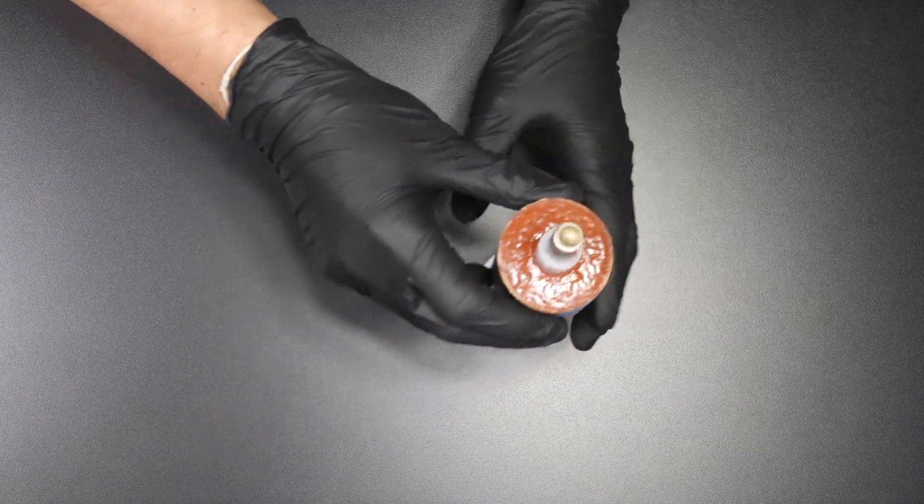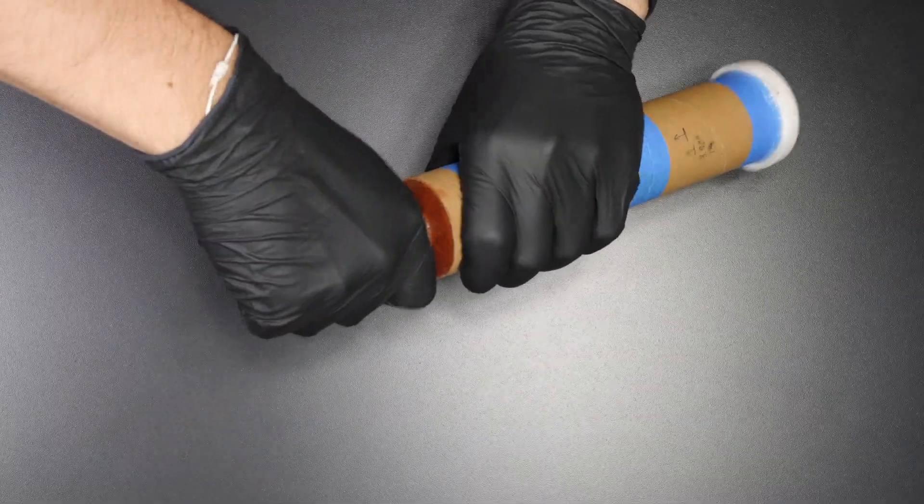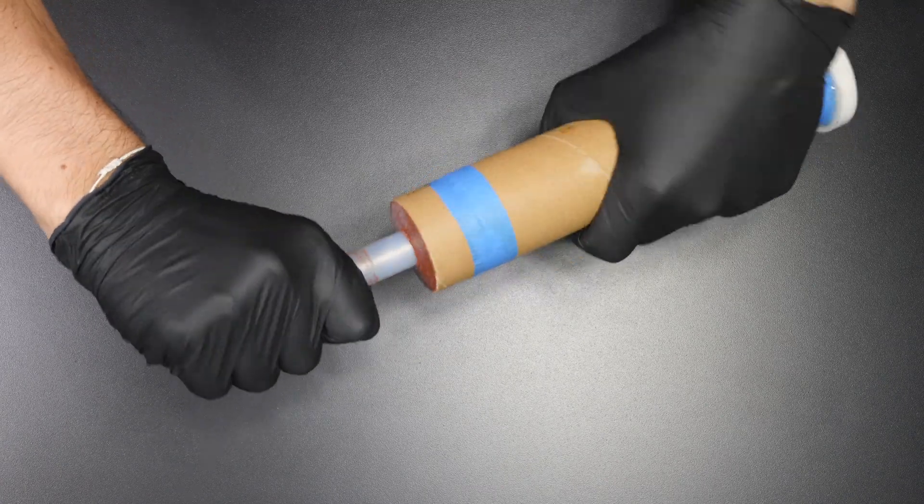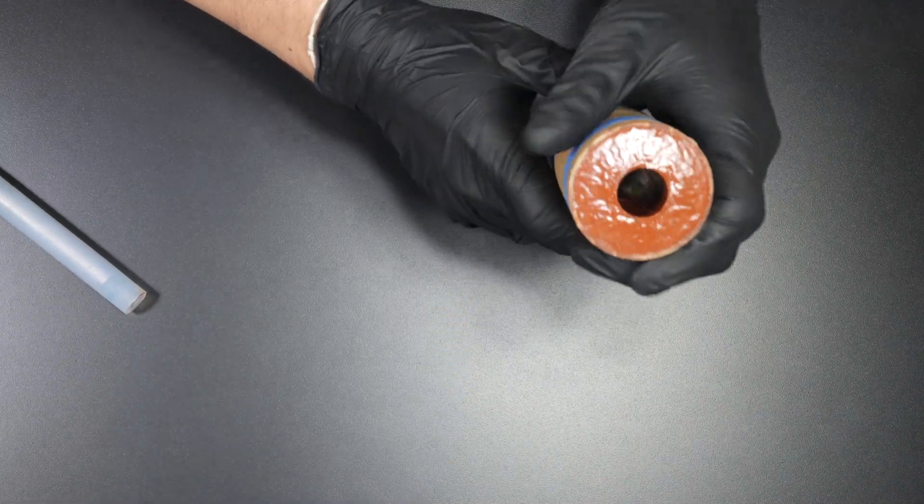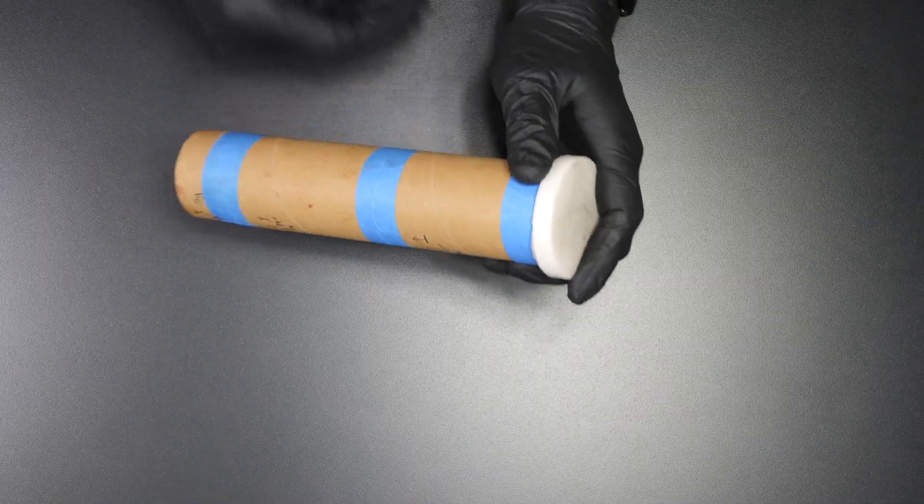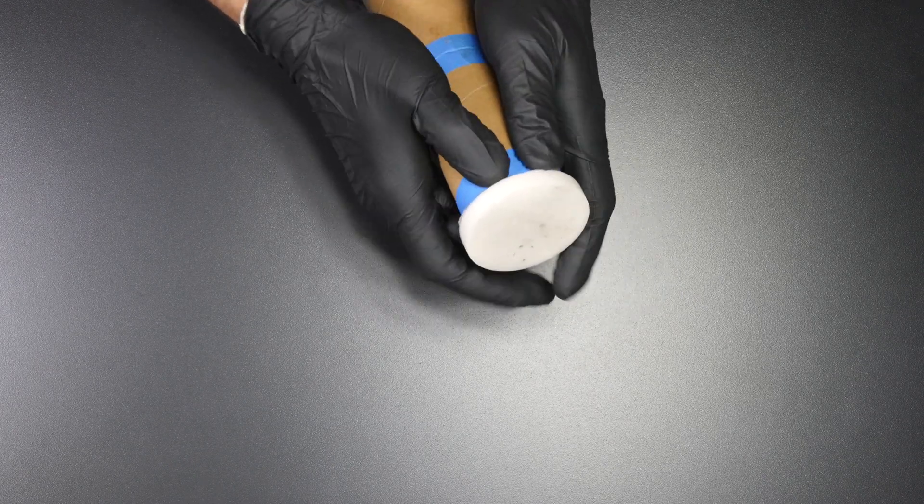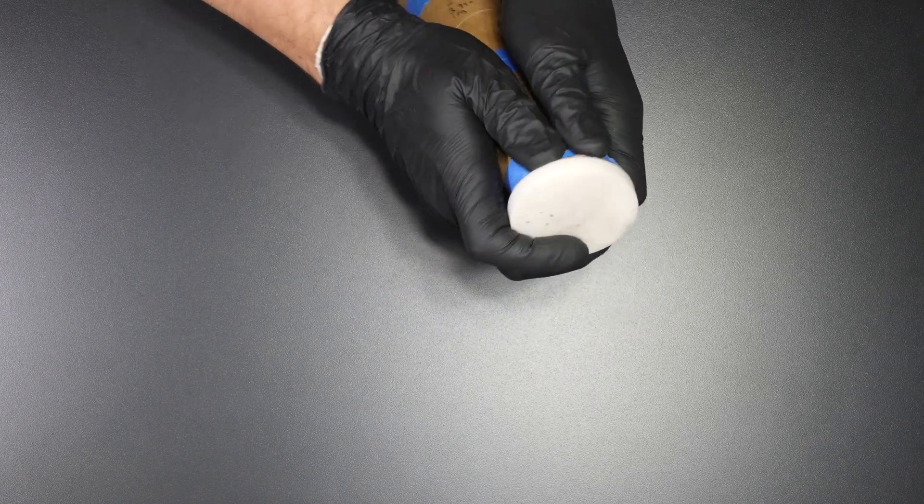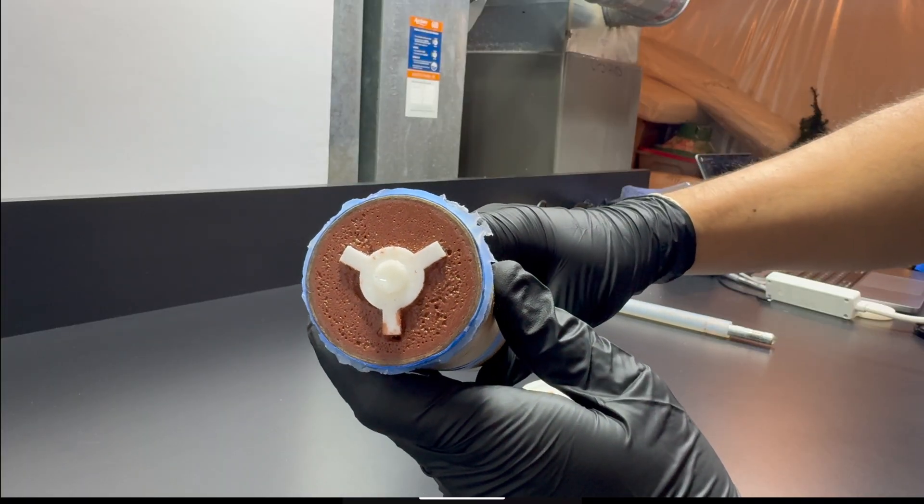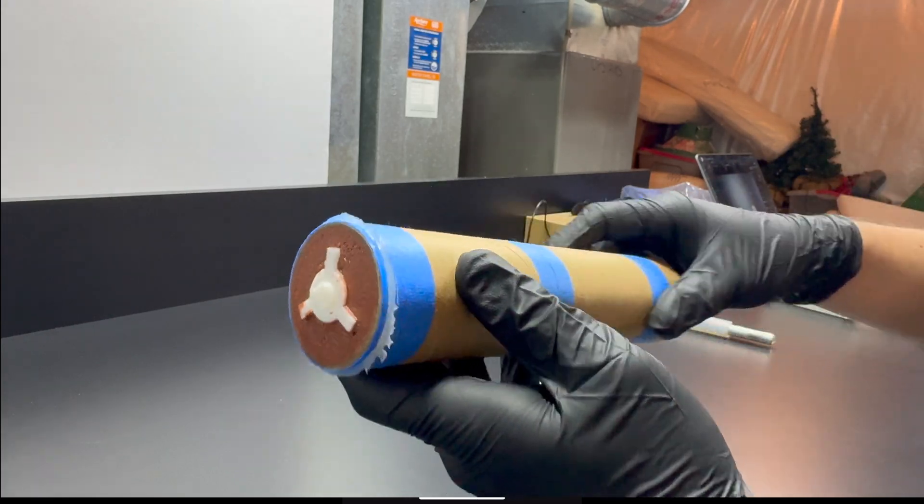Once hardened, it's time to demold. I start off by removing the coring rod. This can be tough due to suction. Then I remove the bottom plate to reveal the finisil mold. I do tend to sometimes get small air bubbles at the bottom, but that's okay.